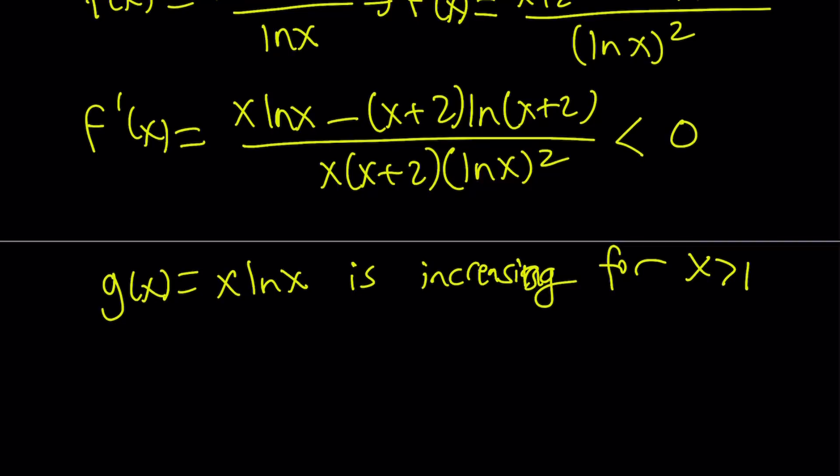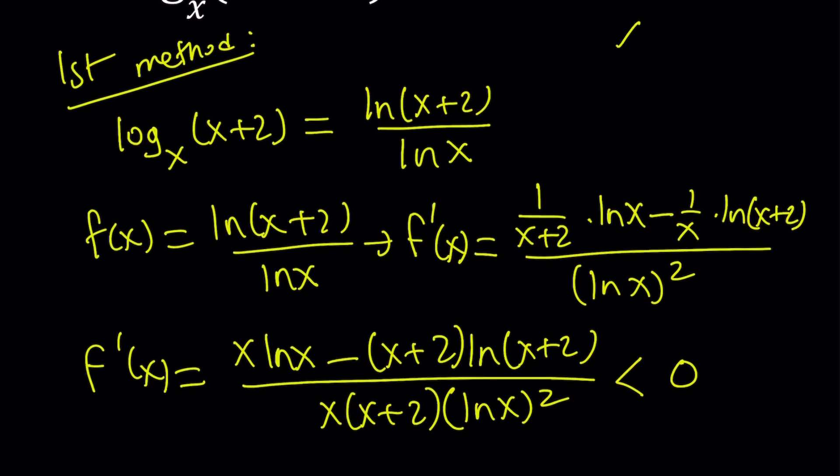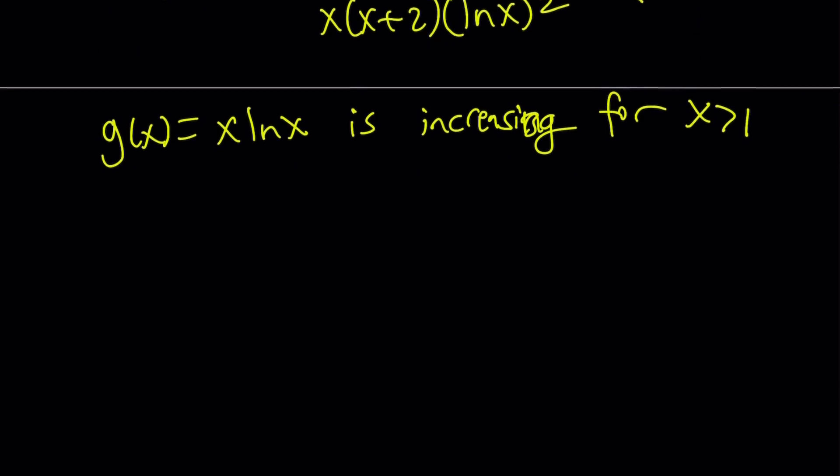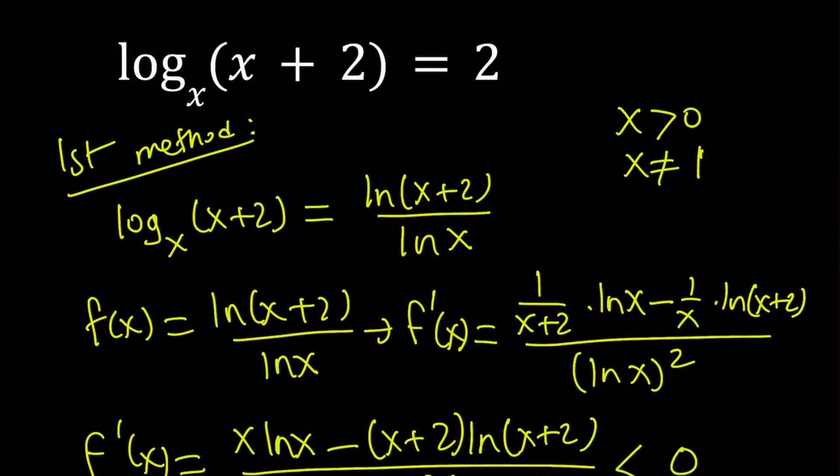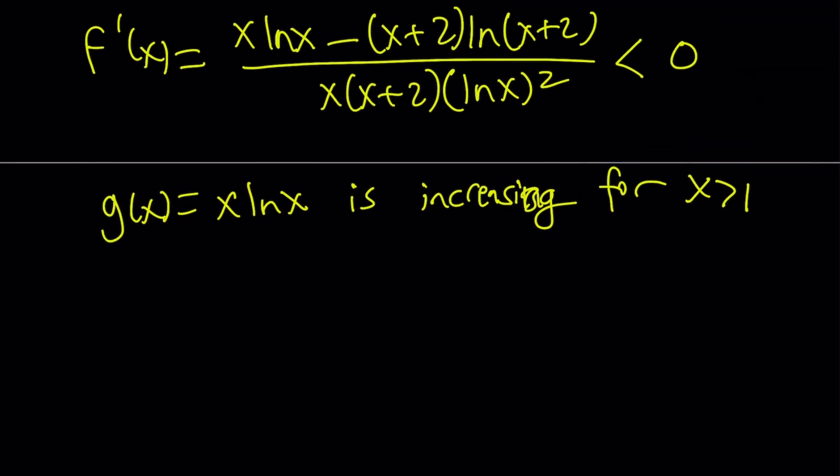And this function is going to be increasing. Therefore, this x plus 2 times ln x plus 2 is going to be greater than x ln x, which is going to make the derivative negative. Obviously, the bottom for x values that are greater than 0 is always going to be positive. Of course, we have to exclude x equals 1 all the time because it's going to make the denominator 0. x must be positive, and x should be different from 1 because that's going to violate the definition of the logarithm. We're not going to have 1 as a base. And obviously, x plus 2 needs to be positive, but x is greater than 0 already satisfies that. So, our function is increasing. Therefore, f prime is negative, which means f of x is always decreasing.